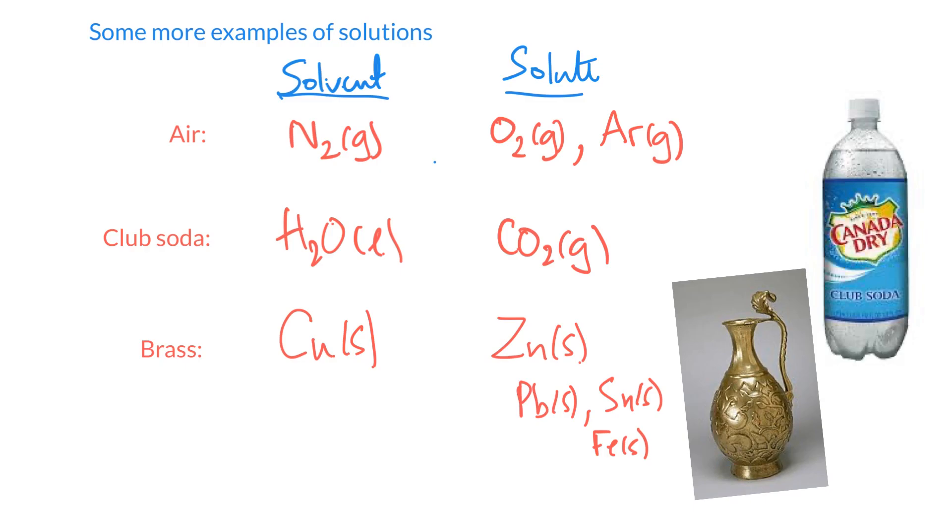So brass is very shiny, right? It looks very similar to gold, but it's definitely not gold. So when most of us think of solutions, we think of maybe a solid sprinkled in some liquid, like sugar in water or salt in water. But it doesn't always have to be that case. So this is an example of air, which is a gas dissolved in a gas. And club soda is an example of a gas dissolved in a liquid. And brass is an example of a whole bunch of solids dissolved in a solid. Sometimes we call this one an alloy, by the way.